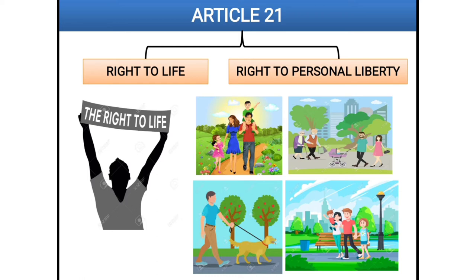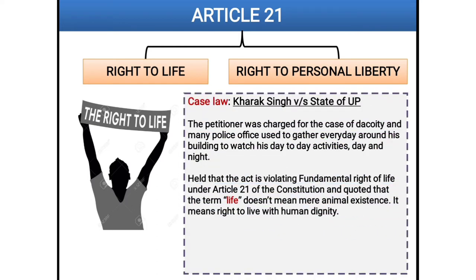Let's understand the scope of right to life through case laws. Case number one: Kharak Singh vs. State of UP. In this case, police, in the name of investigation, would surveil the person's home day and night to monitor the person's movements. This was challenged as infringing the fundamental right to life under the Indian Constitution. The Supreme Court clearly held that the right to life is not only the right to live, but also the right to live with human respect, and under Article 21, that person's right to life was definitely violated.